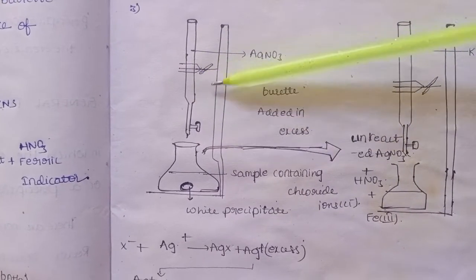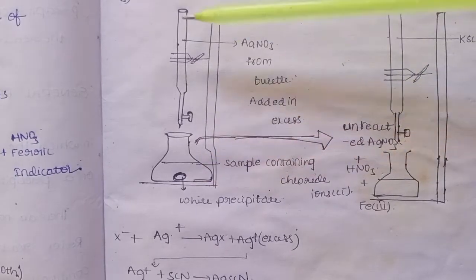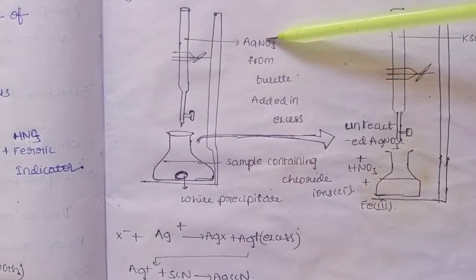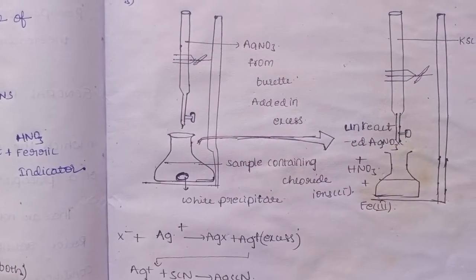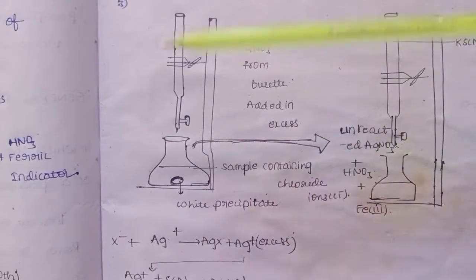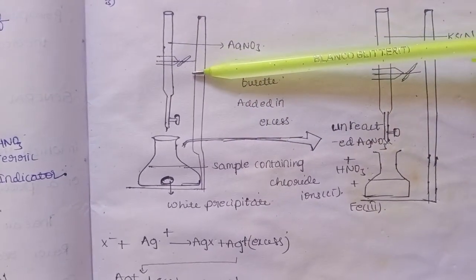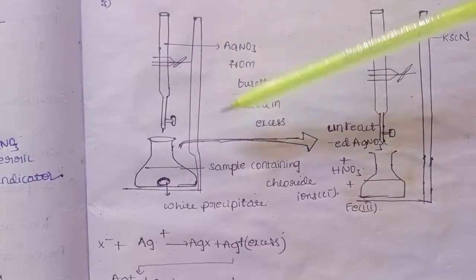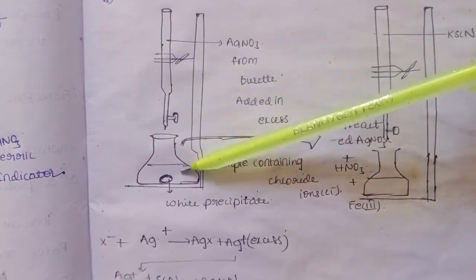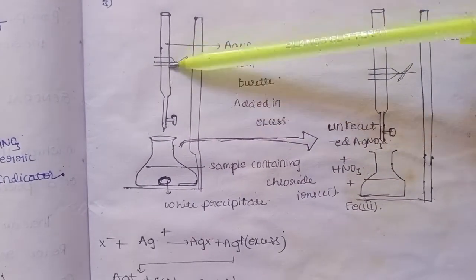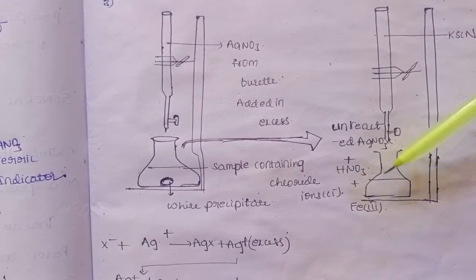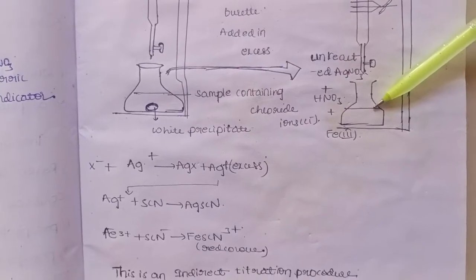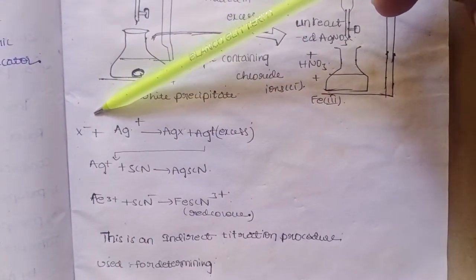Here, AgNO3 is added from the burette first. The anions present — for example, chloride (Cl-) — react with Ag+ to form AgCl, which is a white precipitate. After all the chloride has reacted, there will be excess AgNO3 remaining in the conical flask. This unreacted excess AgNO3 is then back-titrated with standard potassium thiocyanate in the presence of HNO3 and ferric indicator, giving a red color at the end point — this is the Volhard's method.